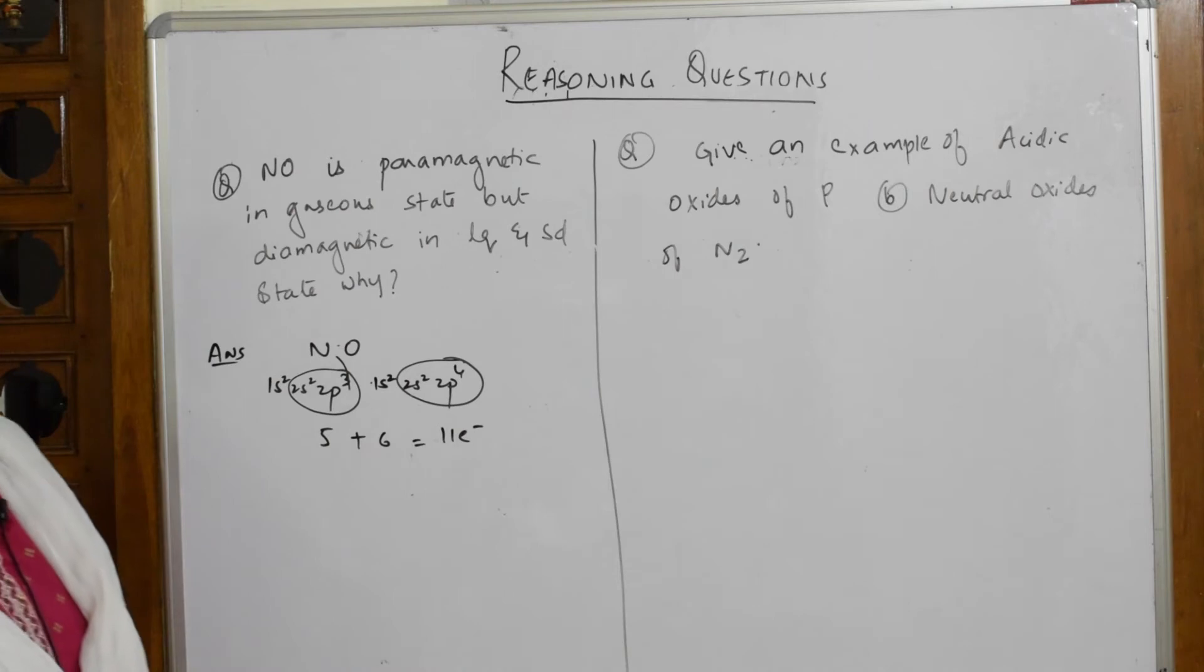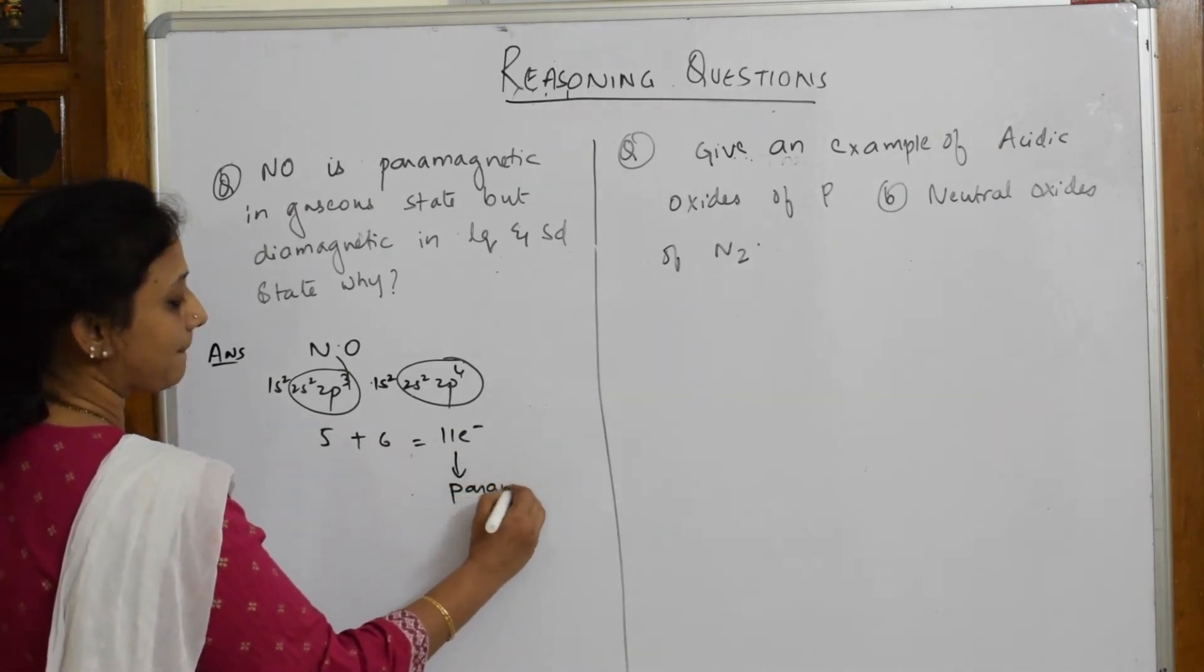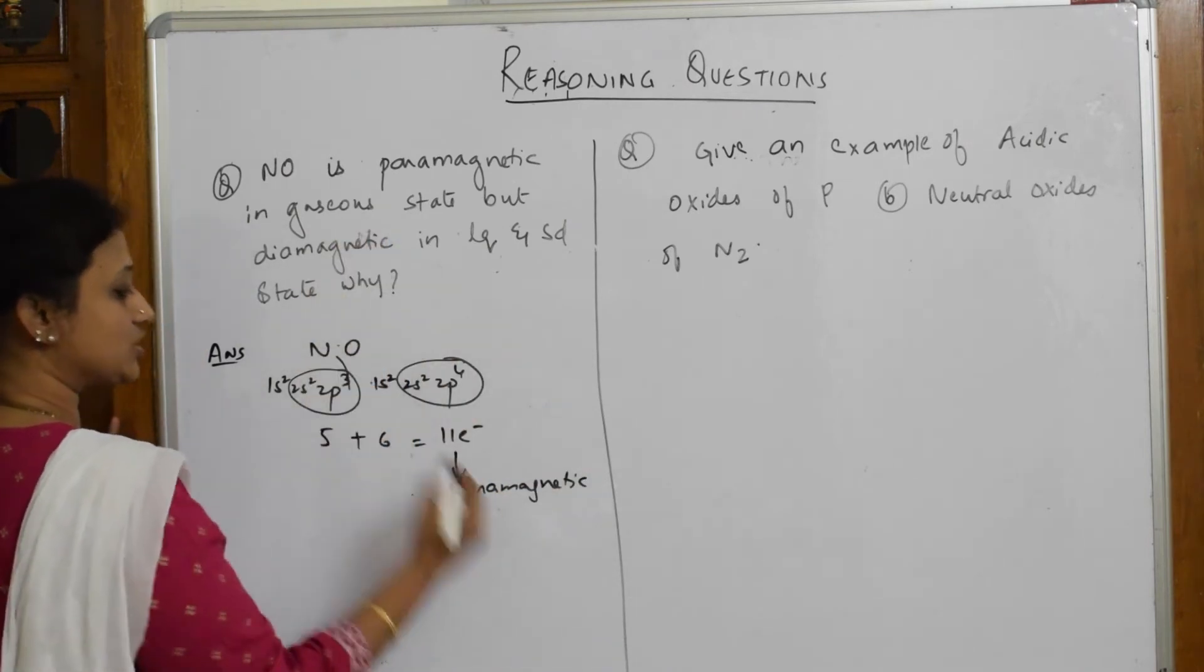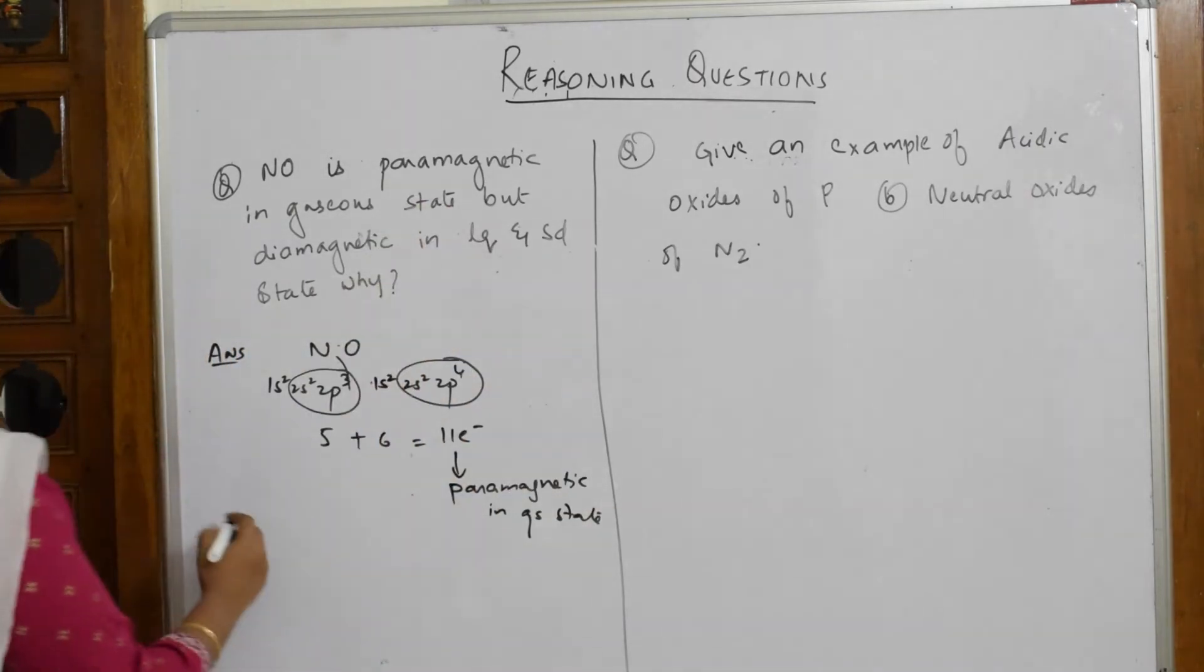When the number of electrons is odd, it is 11. That is why NO is paramagnetic. In which state? Paramagnetic in gaseous state, the gaseous form. Now when we come to liquid and solid state.